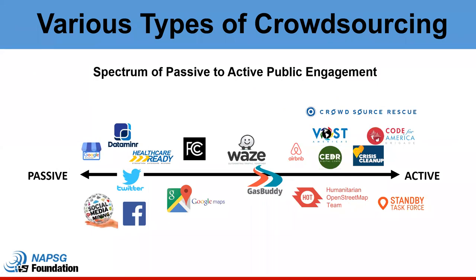At FEMA, we're using a spectrum of crowdsourcing from passive to active. Passive crowdsourcing involves companies like Google collecting business data, or Facebook and Twitter. Then we have Waze and GasBuddy where users contribute to the platform. We also work with highly active crowdsourcing groups — digital volunteer groups — including Code for America, CDER, Standby Task Force. These skilled, highly trained volunteers curate products using crowdsource data to create situational awareness tools.